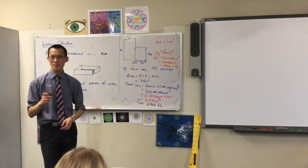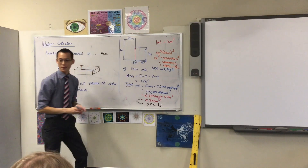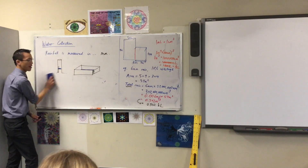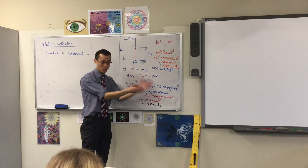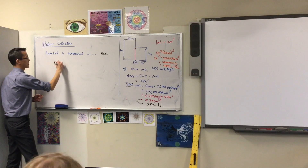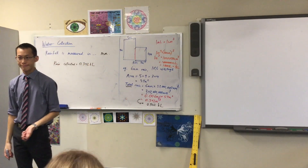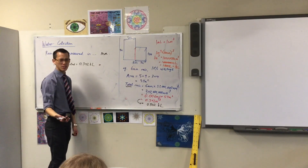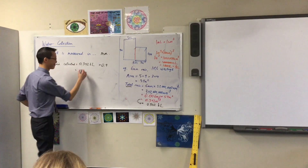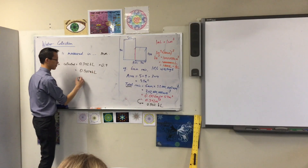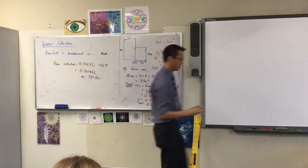We're told there's 10% wastage — not all of that rain gets collected. That 0.342 kiloliters is the total rain. To go straight to how much rain is actually collected, I multiply by 90%, which is 0.9. So rain collected equals 0.342 times 0.9, which is 307.8 liters.